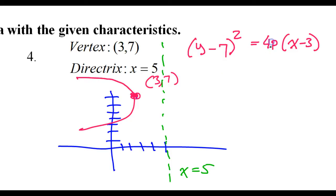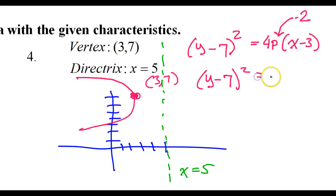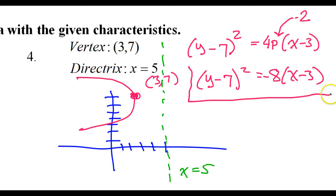So all we need now is 4p. The p is the distance between the vertex and the directrix. The x value here is 3, and the line is at 5 — so between 3 and 5, that's 2. So my p value is negative 2 to be precise, since the parabola is facing to the left. That's going to give us (y - 7)² = -8(x - 3). Not 16 — 4 times negative 2 is negative 8 times (x - 3). And this will be the equation for number 4.